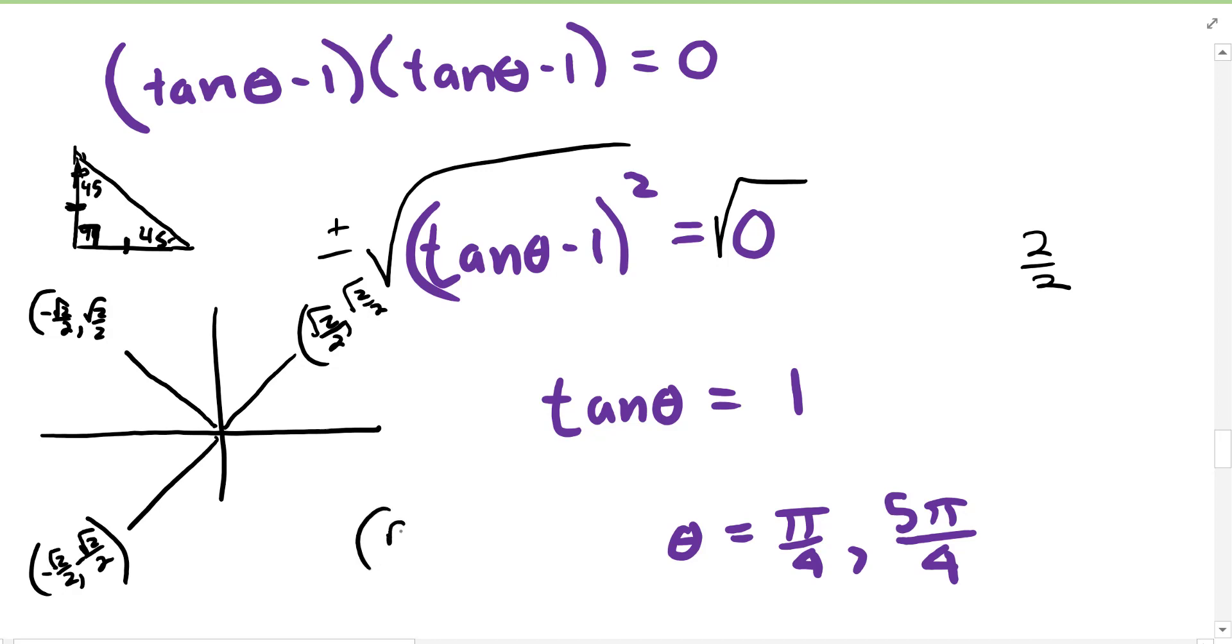And then this quadrant, the cosine is positive, the sine is negative. If we don't need both versions, we just need the positive version, then remember tangent is positive in this quadrant and in this quadrant.